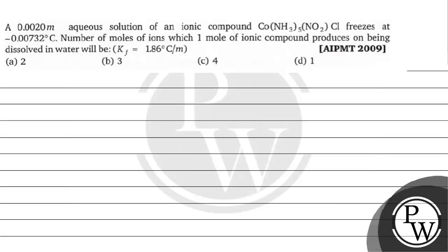Hello, let's read this question. The question says: a 0.0020 molal solution of an ionic compound freezes at minus 0.00732 degrees Celsius. The number of moles of ions which one mole of ionic compound produces on being dissolved in water will be?